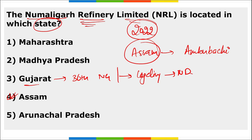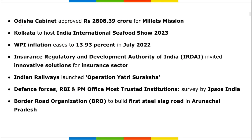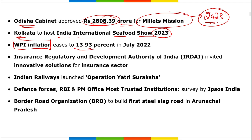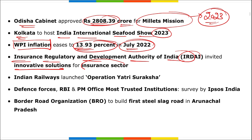The 36th National Games will be held in Gujarat, with the cycling event taking place in New Delhi. In Madhya Pradesh's Kuno National Park, eight cheetahs brought from Namibia will be kept. Odisha's cabinet approved ₹2808.39 crore for the Millets Mission, and the year 2023 has been declared the International Year of Millets. Kolkata will host the India International Seafood Show for 2023.